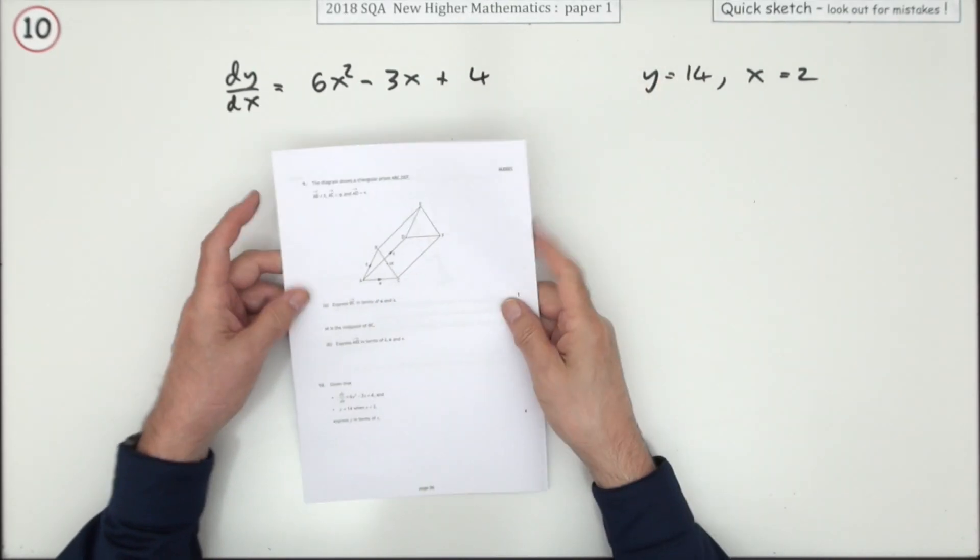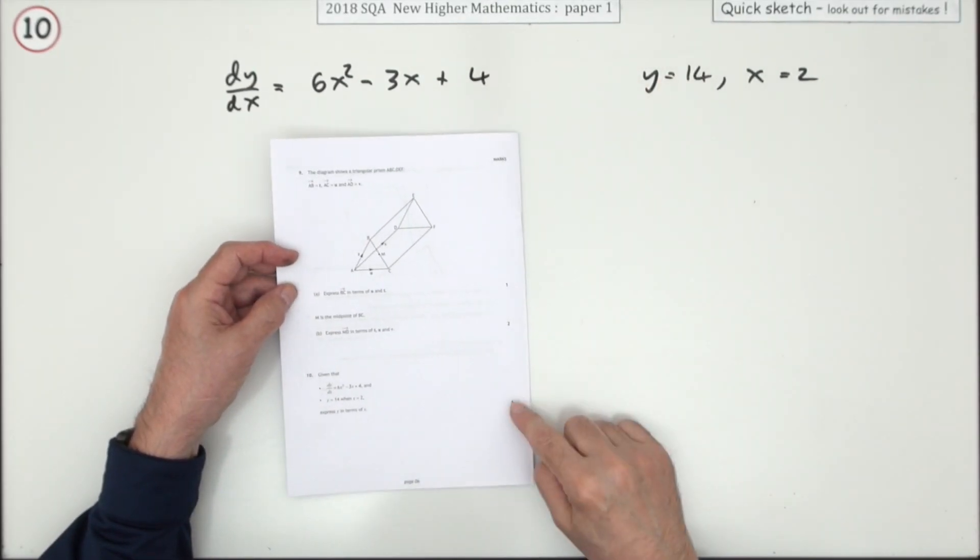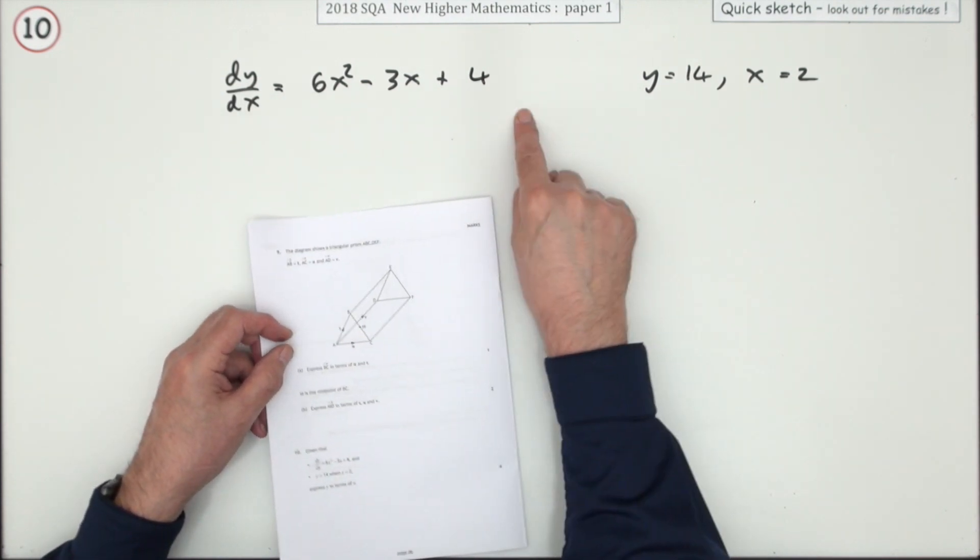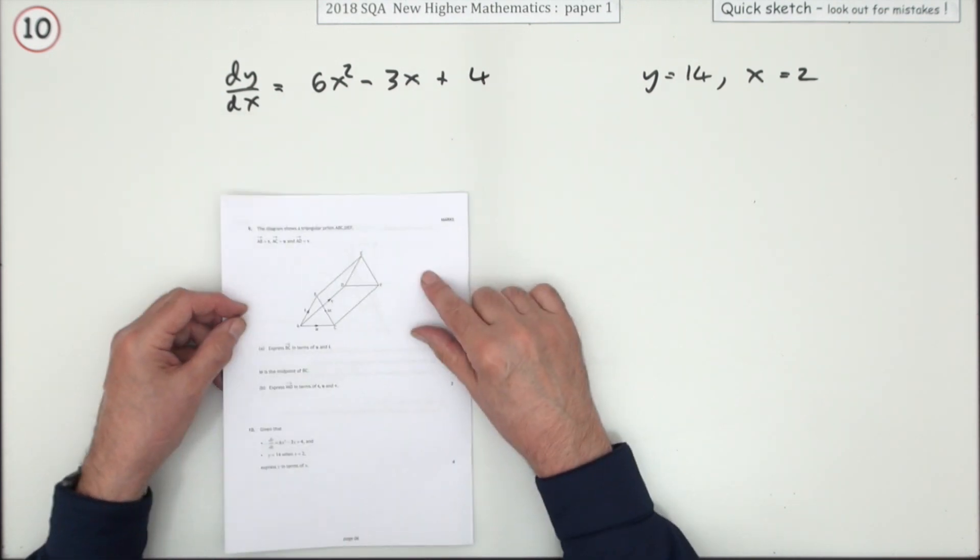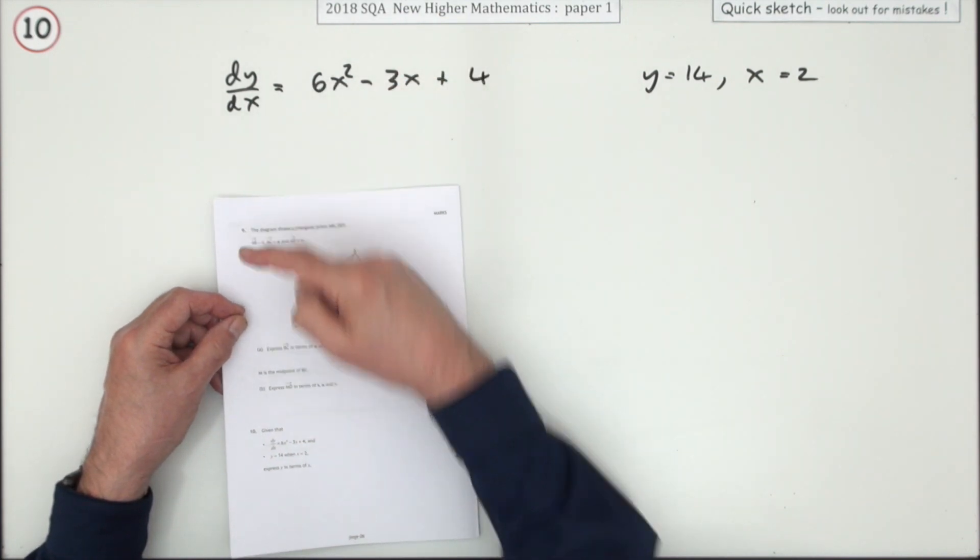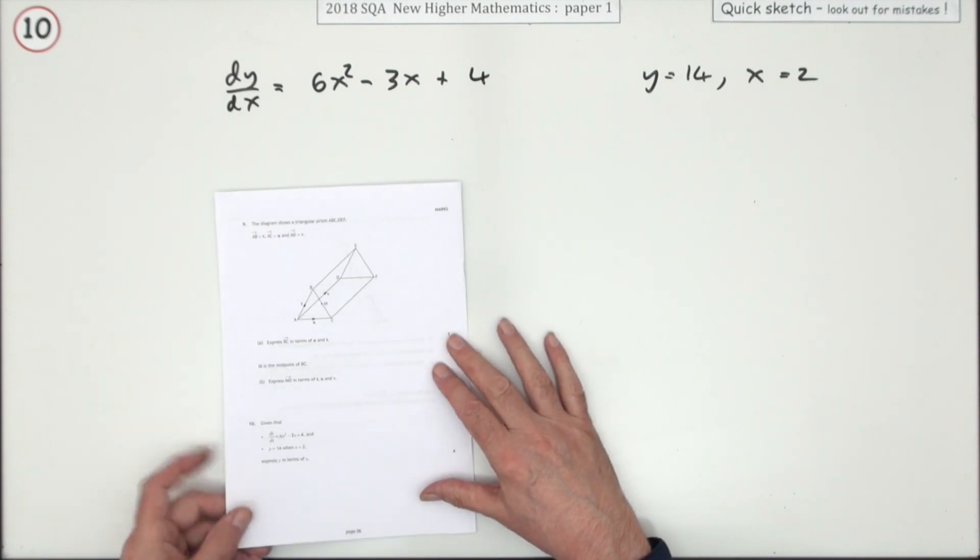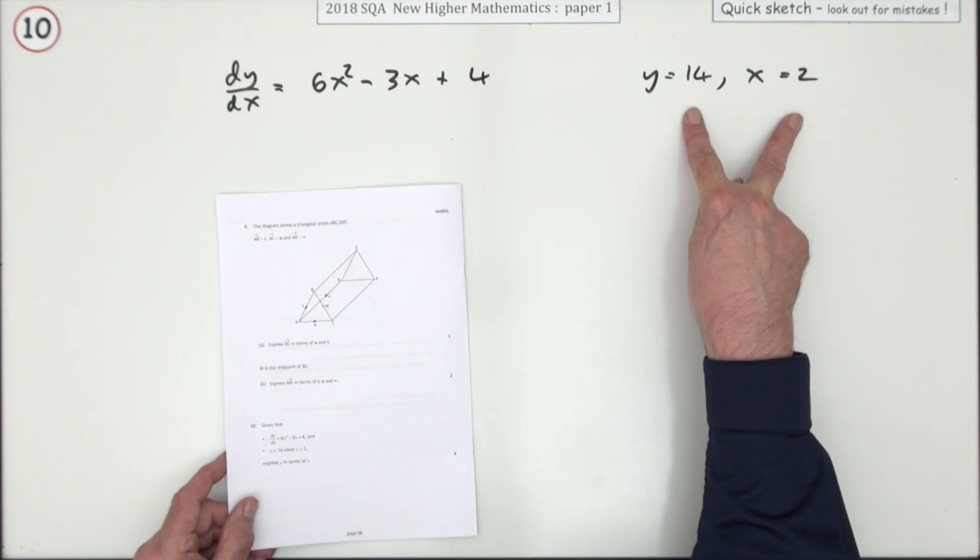Number 10 from paper one of the 2018 higher maths, four marks. You've got what's called a differential equation because you've got the derivative in it, and you have to go back to the original, the one that just goes y equals, express y in terms of x. You've got these values you can pop into that for the constant.